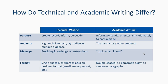By contrast, the audience for academic writing is usually simple — ultimately the instructor who gives you the grade, sometimes framed as other students or a college-educated audience. The message in technical writing provides knowledge or instructions, whereas academic writing demonstrates what you've learned and that you have the skills and capabilities.